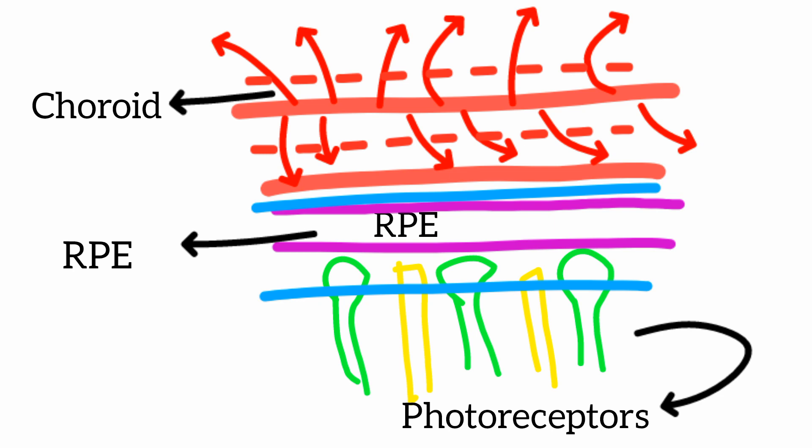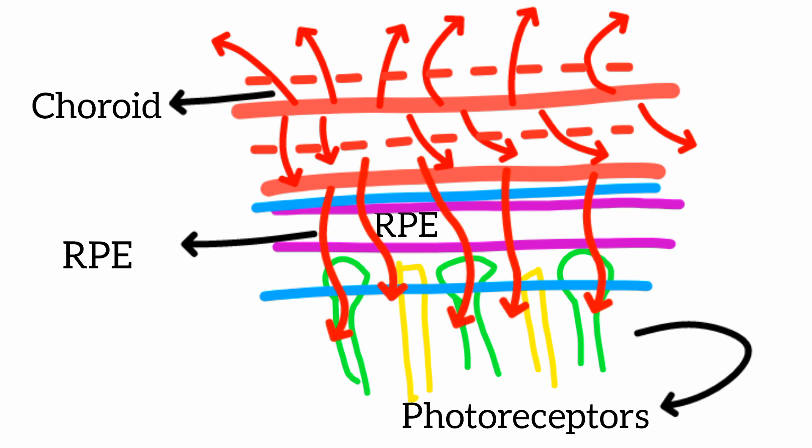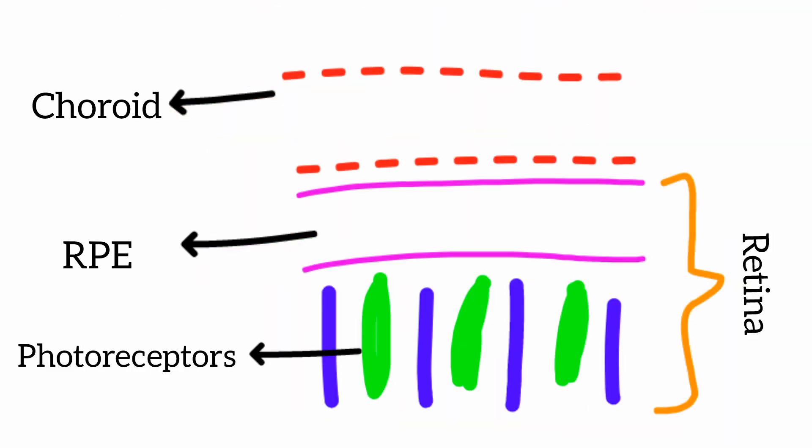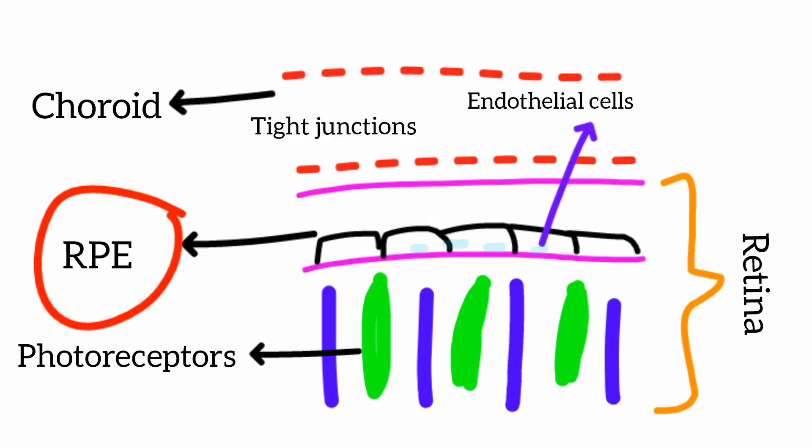When there is leakage from the choroid and there is no barrier to protect the retinal photoreceptors, blood can move to the photoreceptors, damage the retinal surface, and affect the transparency of the retina. Therefore, to protect the retina from blood moving from the choroid, there is a protective layer. The RPE lies between the choriocapillaries and the photoreceptor layer of the neurosensory retina.